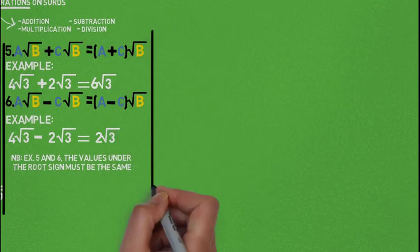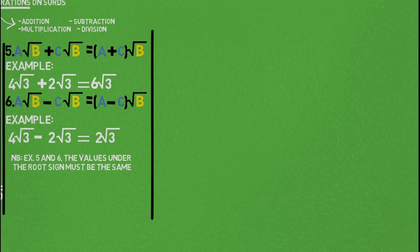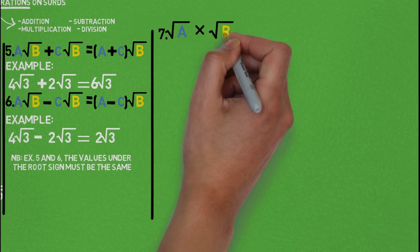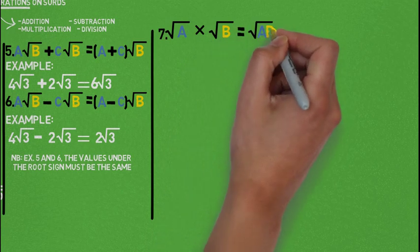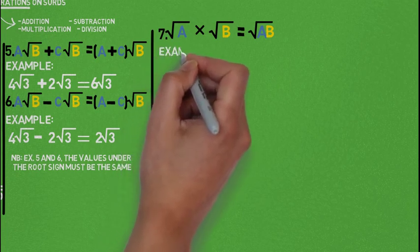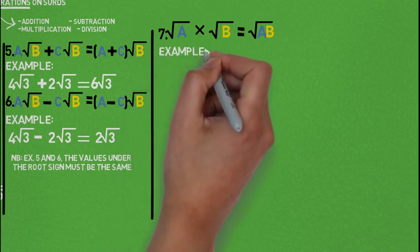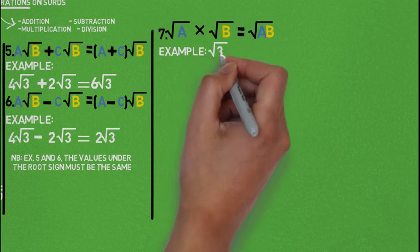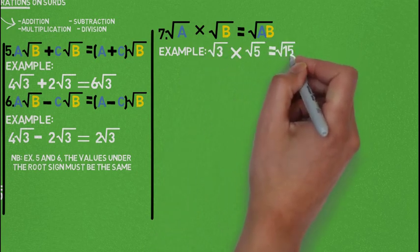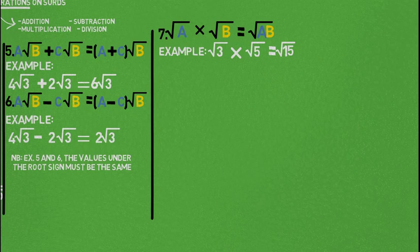Property number 7: root of A times root of B gives root of AB, because you only multiply the values under the root signs. An example is root of 3 times root of 5, which gives root of 15. We multiply the numbers under the root sign to get root of 15.